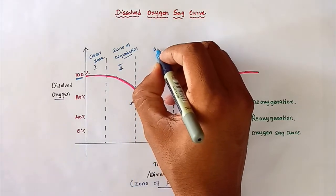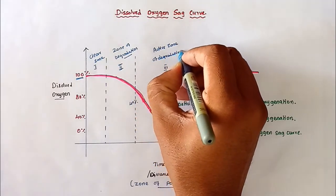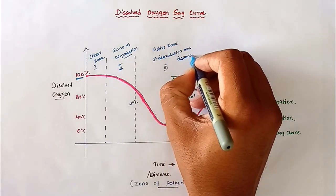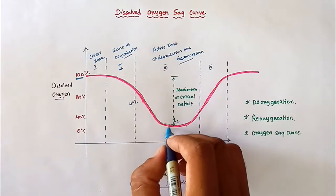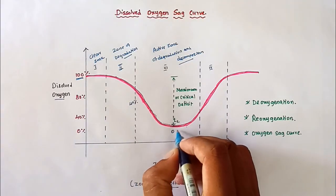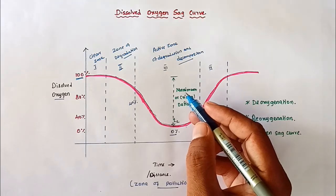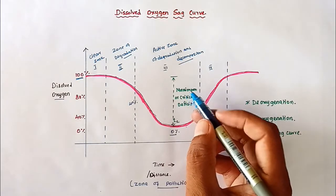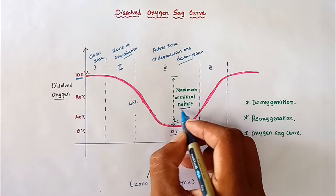After that, zone three is the active zone of degradation and decomposition. In that zone, decomposition occurs actively, so the dissolved oxygen level drops to zero percent and the BOD is at its maximum. The biological oxygen demand — that is, the oxygen required to decompose the materials — is 100%.